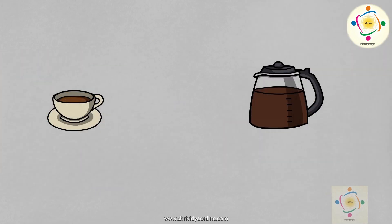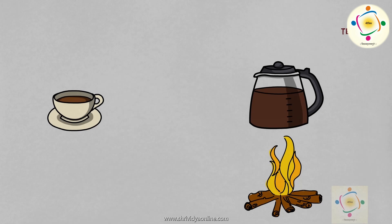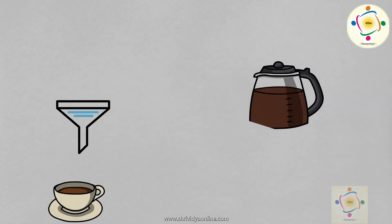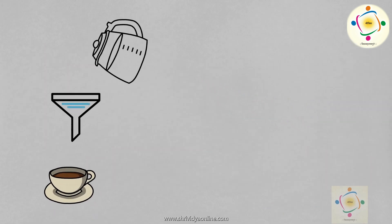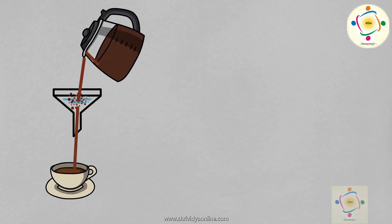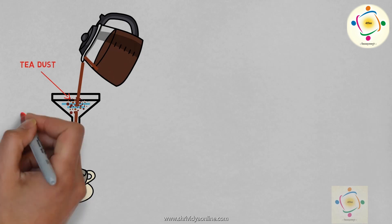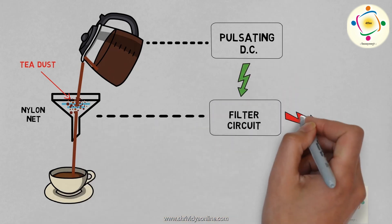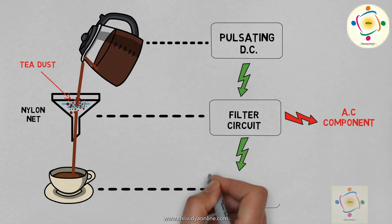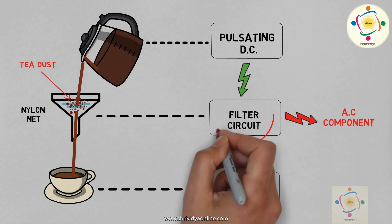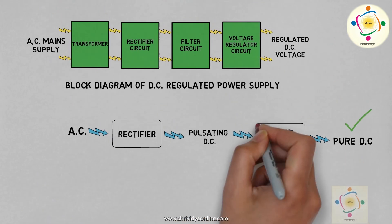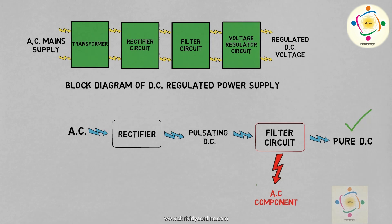Consider this analogy. When we prepare tea, we add tea dust in water and boil it. After boiling, we will not serve this directly with tea dust. We filter it out and remove the tea dust because we do not want that tea dust, and we use a nylon net as a filter. In the same way, we want to remove the AC component, so we use a filter. Here we will not use a nylon net, but we require some different electronic components to build a filter for the AC component. So the filter removes the AC part and we get a smooth waveform of DC.